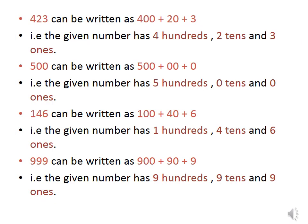423 can be written as 400 plus 20 plus 3 as it contains 4 hundreds, 2 tens and 3 ones. Similarly, 500 can simply be written as 500 plus 0 plus 0 because 500 doesn't have any tens or ones.